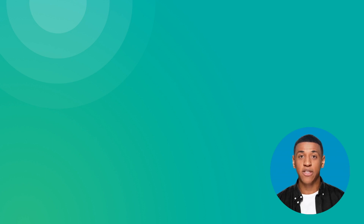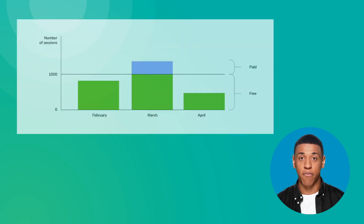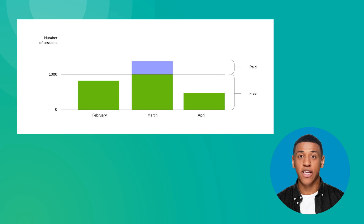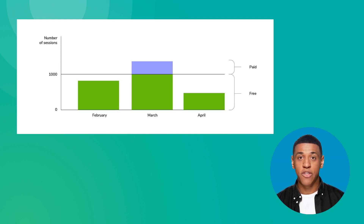SendPulse is an official WhatsApp business solution provider. We offer your business 1,000 free sessions per month and don't charge you for connecting your phone number to WhatsApp or creating template messages. Free-tier conversations can be both business-initiated and user-initiated. This way, you can start conversations for free, encouraging your audience to communicate with you via WhatsApp. Also, if your incoming message traffic isn't large and your chat total doesn't exceed 1,000, then by using SendPulse, you can send WhatsApp campaigns for free.